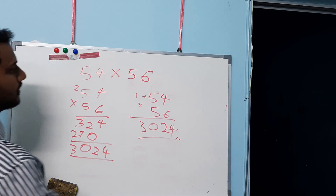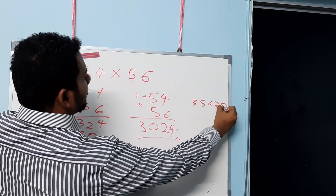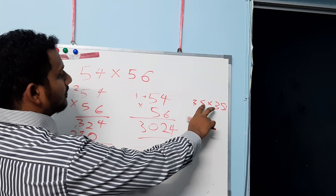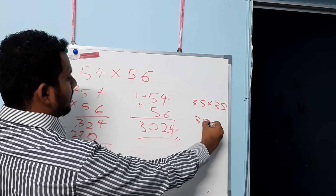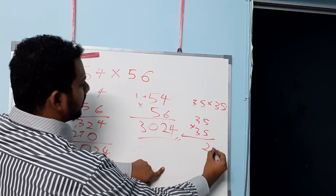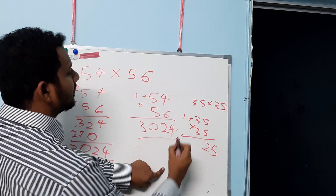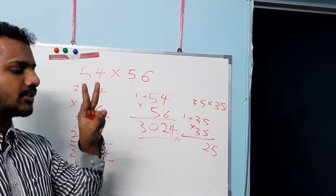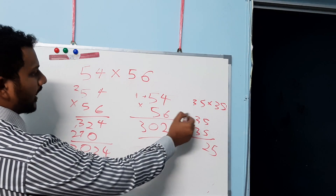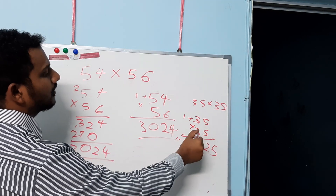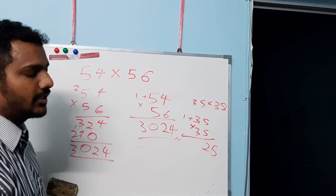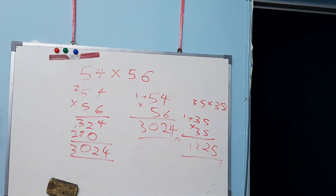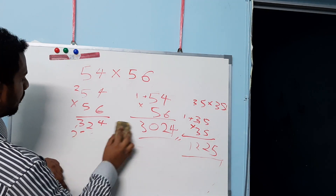Let's see another example: 35 times 35. The left-hand side has a common value of 3, and the right-hand side values add up to 10 — 5 plus 5 is 10. So: 5 times 5 is 25, add 1 to the left — you always add 1 irrespective of the situation, as long as the two rules are met. Then 3 plus 1 is 4, and 4 times 3 is 12. Answer: 1225.